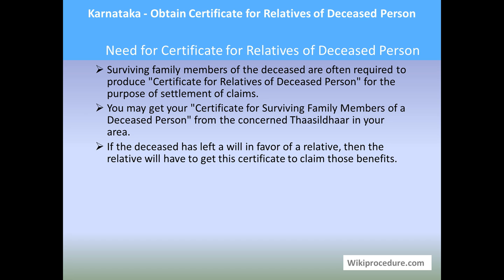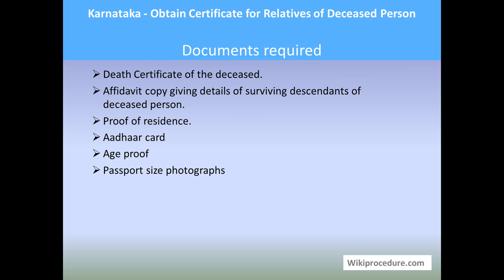Let us find the documents required. You need: a death certificate of the deceased, an affidavit copy giving details of surviving descendants of the deceased person, proof of residence, voter ID card, age proof, passport-size photographs. These are the documents you need to submit along with your application while applying.